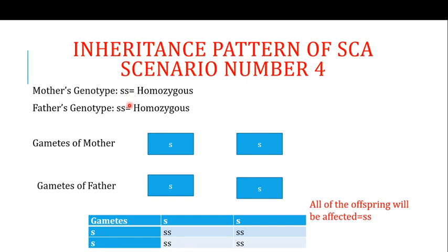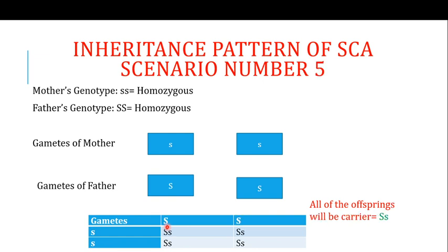In the fourth scenario, both mother and father are affected — both carry both alleles in the diseased form (ss). This is a very simple case: all of the offspring will be affected because both parents' gametes carry only the diseased allele.